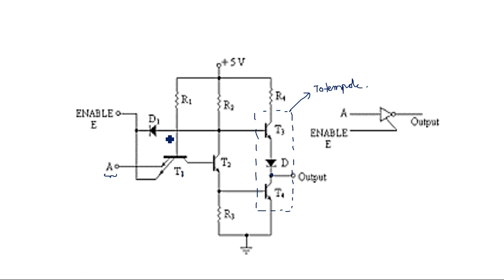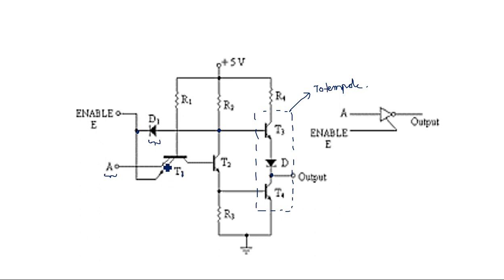Additionally, when you compare this with the standard TTL NAND gate circuit, this circuit has one additional diode D1, which is connected from the emitter E2 of transistor T1 to the junction where the base of T3 is connected.